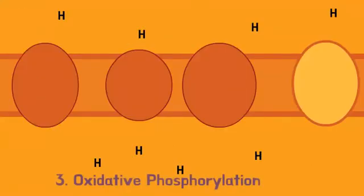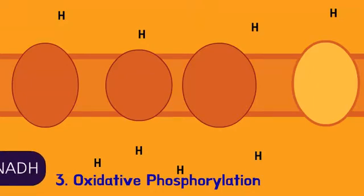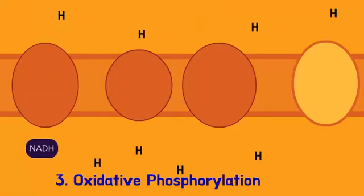The third and final stage of cellular respiration is oxidative phosphorylation, which includes the electron transport chain and chemiosmosis. First, the electron carrier molecules that we made in glycolysis and the citric acid cycle release their electrons to the electron transport chain.